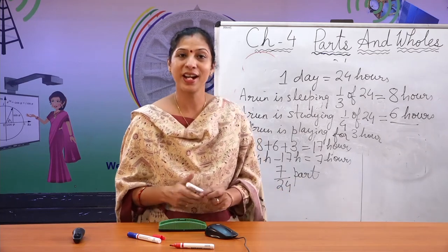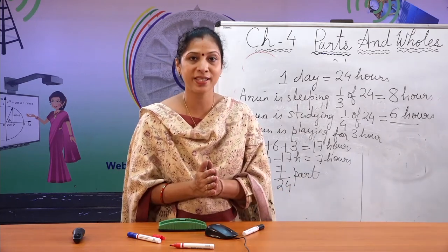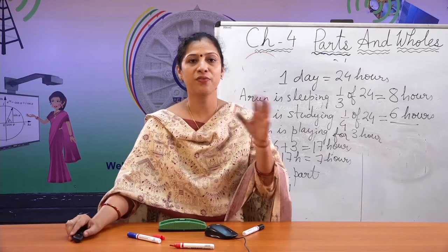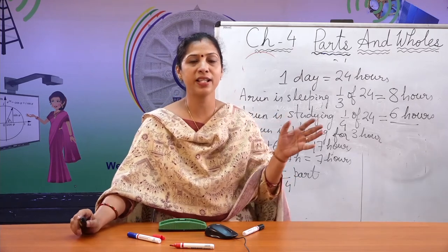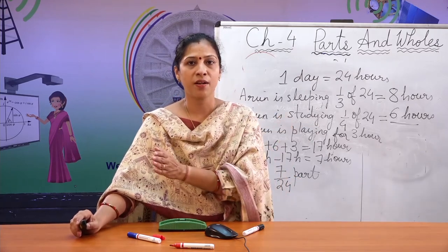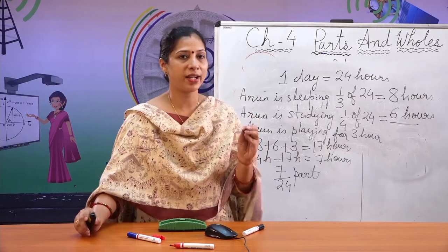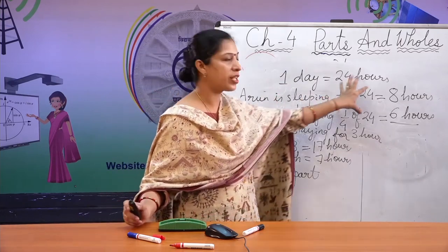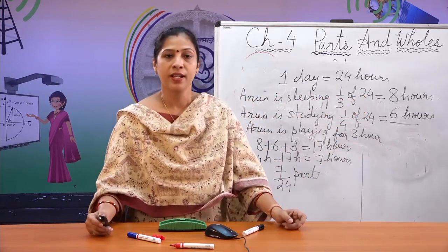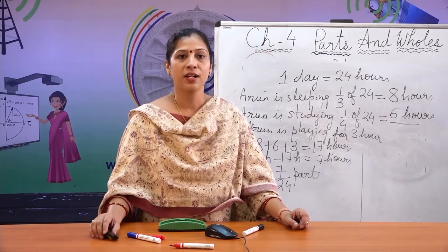Yes children, understood? It is very easy when you find out like this — taking the total as the whole and then finding out the part by dividing into equal parts. Now let us go to the next one.